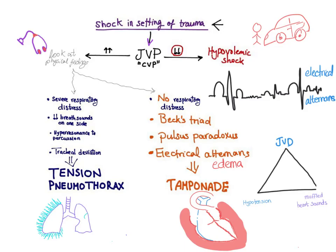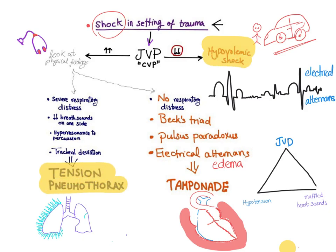Let's talk about shock in the setting of a trauma patient. A trauma patient will usually come from a motor vehicle accident presenting with shock, and there are three main diagnoses: first, hypovolemic shock; second, tension pneumothorax; and third, cardiac tamponade. The first step to differentiate them is to look at the jugular venous pressure or central venous pressure.